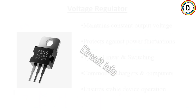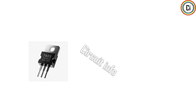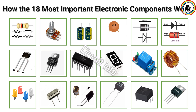A voltage regulator maintains a constant output voltage level even when input voltage or load conditions change. This stability protects electronic devices from voltage fluctuations, ensuring reliable performance and preventing damage. There are two main types: linear regulators, which provide smooth, low-noise output but lower efficiency, and switching regulators, which are more efficient for higher power applications. Voltage regulators are found in power supplies, calculators, mobile devices, and many other electronics where stable voltage is crucial for safe operation.